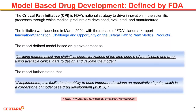The Critical Path Initiative is a strategy from the U.S. Food and Drug Administration to drive innovation in the scientific process used to develop medical products and therapeutics. This initiative was launched in March 2004 with a report that stated in part: building mathematical and statistical characterizations of the time course of the disease and drug using available clinical data to design and validate the model, which refers to building models from observations.